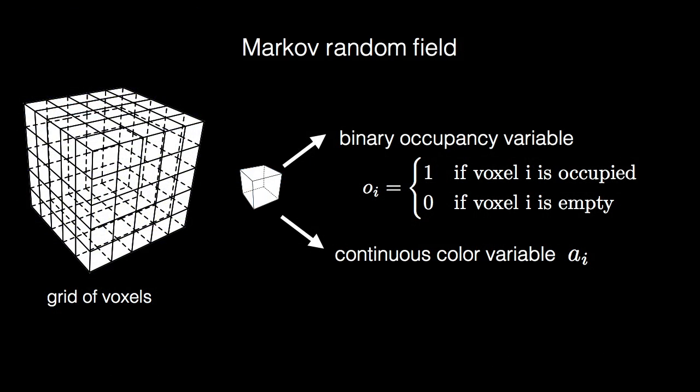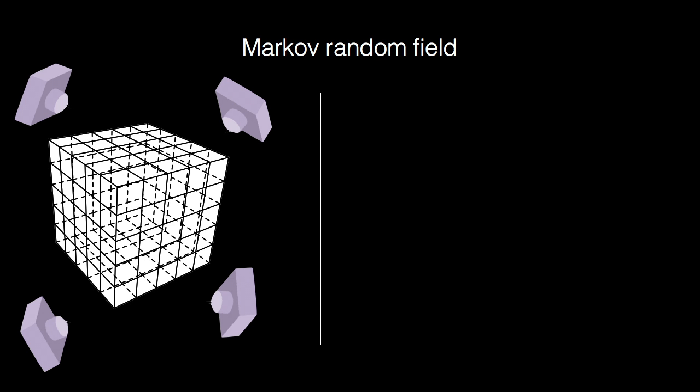We formulate the problem as inference in a three-dimensional Markov random field. Each voxel is associated with a discrete occupancy and a continuous color variable. Our MRF models the joint distribution over voxel occupancy and color, given all the image evidence.